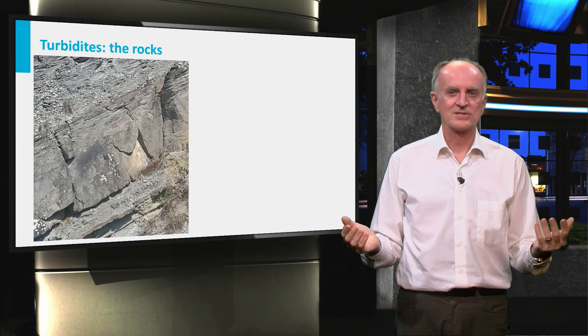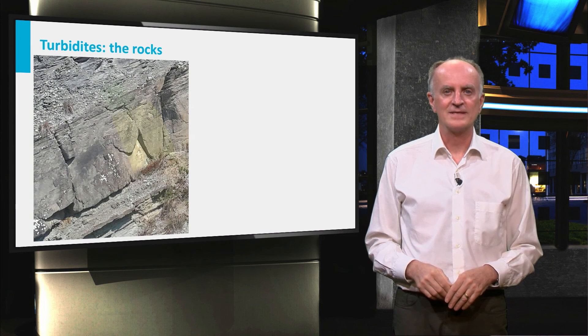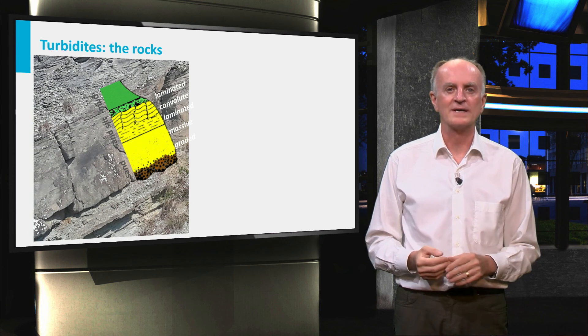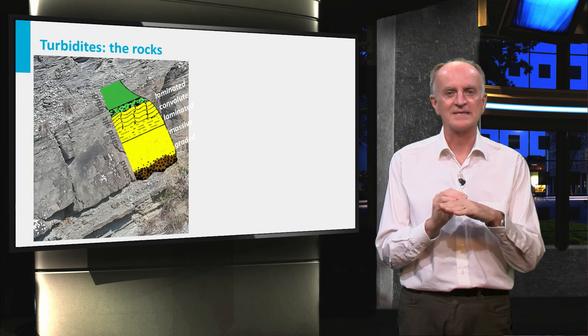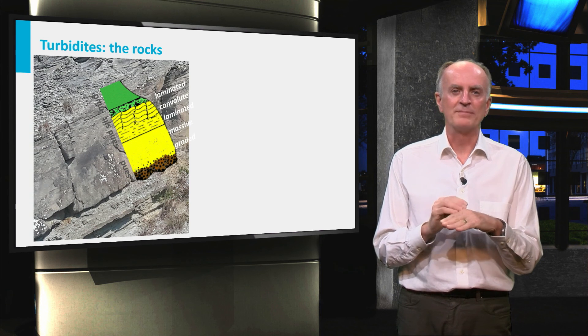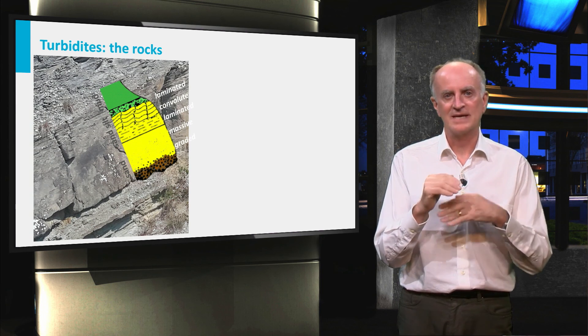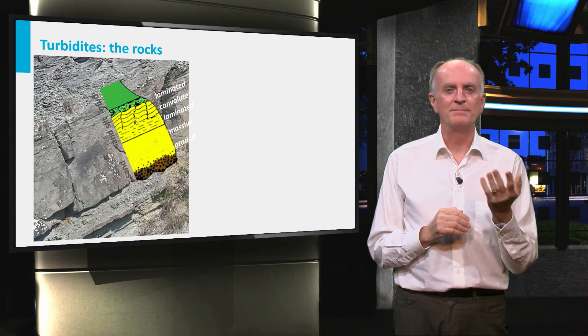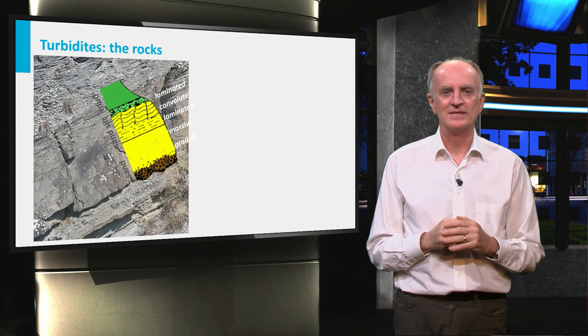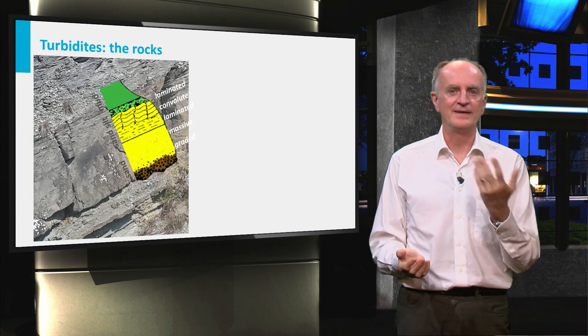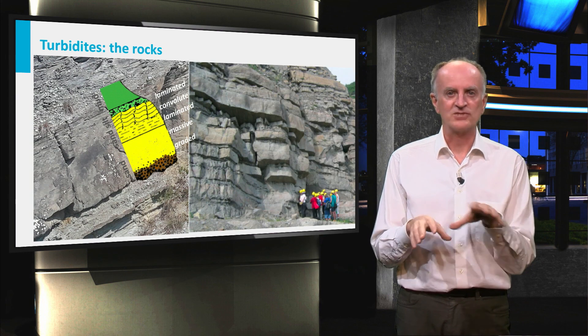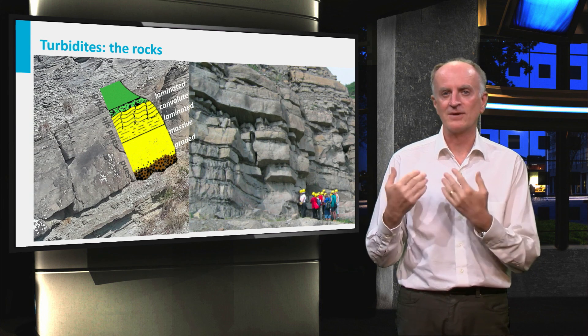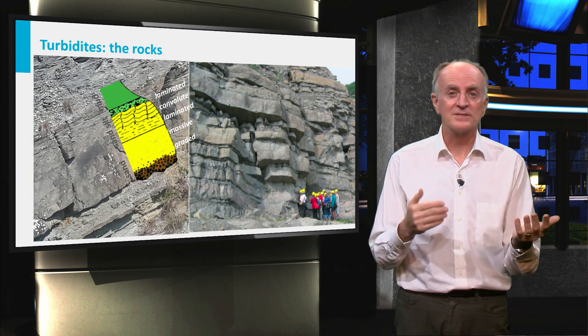And now let us look at what turbidite deposits look like. Sedimentary layers deposited by turbidity currents have a typical organization called Bouma sequence. This includes graded sands at the bottom, followed upward by massive beds, by laminated and convoluted sands, eventually capped by the hemipelagic mud. These muds represent the background sedimentation deposited between one catastrophic event and the other. Turbidity currents are generated by instabilities on the continental shelf and slope, and occur at fairly regular intervals of maybe hundreds to thousands of years.